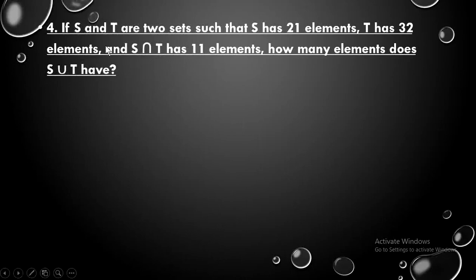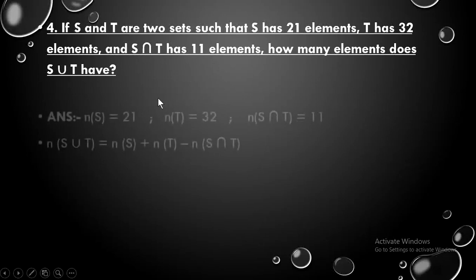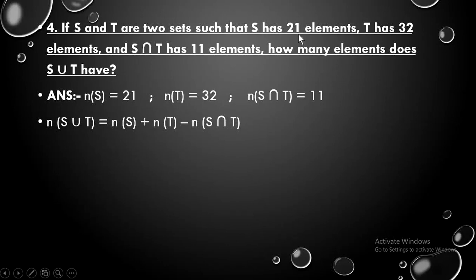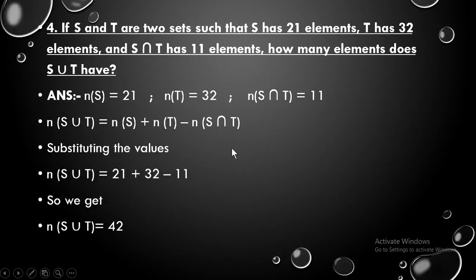The next question: S and T are two sets such that S has 21 elements, T has 32 elements, and S intersection T has 11. How many elements does S union T have? Three values are given — write the formula, put S and T in place of X and Y, substitute the values, and on further calculation you get the answer S union T equals 42.